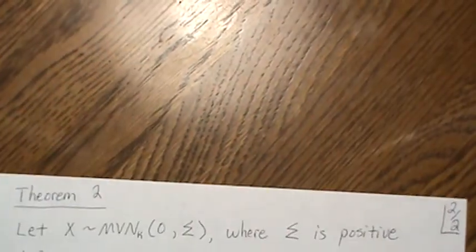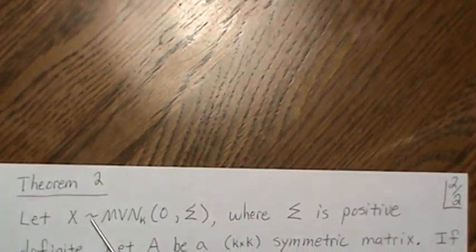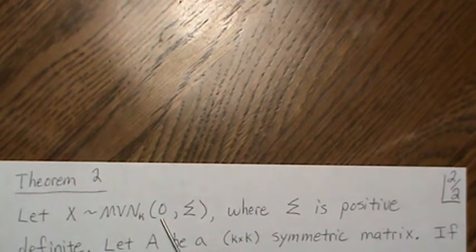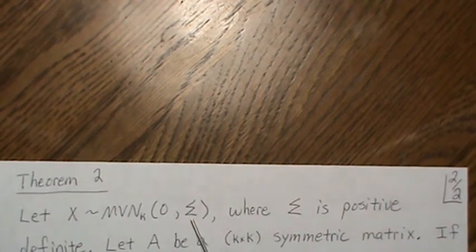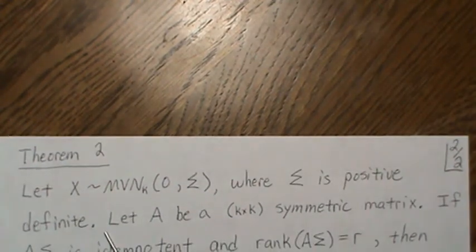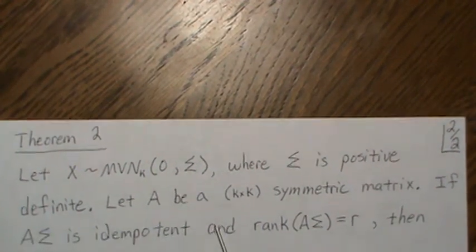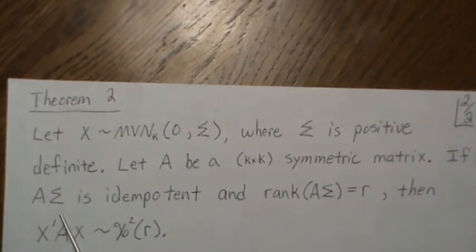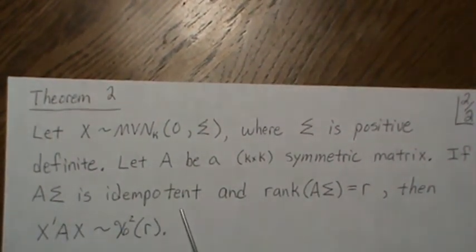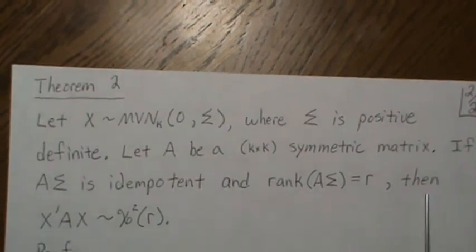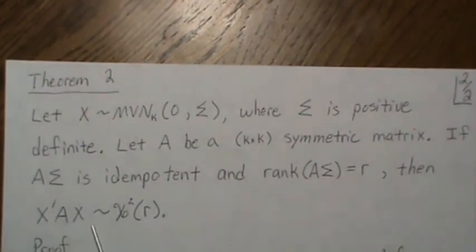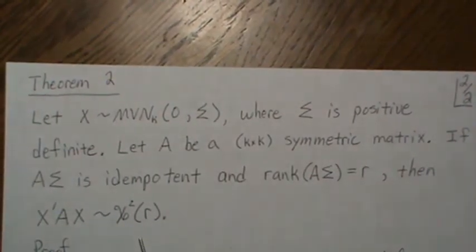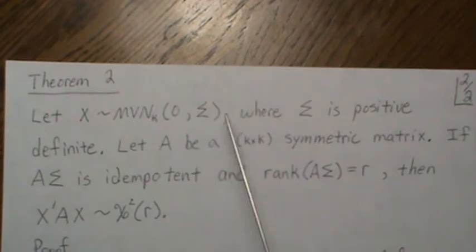For theorem 2, let X be a K by one vector that is multivariate normal zero and Sigma, where Sigma is a positive definite matrix. Let A be a symmetric K by K matrix. If A*Sigma is idempotent and has rank R, then the quadratic form X'AX is chi-squared with R degrees of freedom — a central chi-squared with R degrees of freedom. The goal is to reduce this to theorem 1.